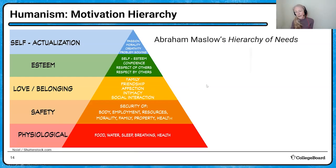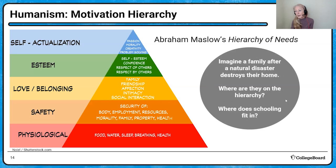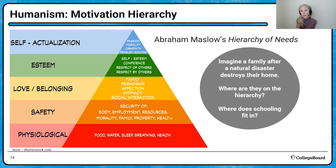We know that may not always be true, but imagine a family after a natural disaster destroys their home. Where would they be on this hierarchy? What needs are they going to be motivated to meet? Are you really going to be worried about sending your kids to school when you're worrying about the lower-level need of safety?